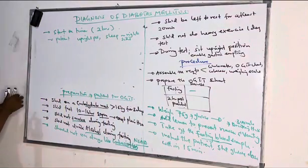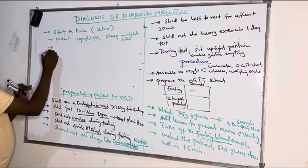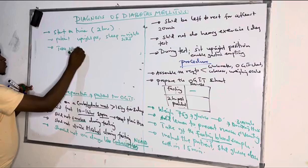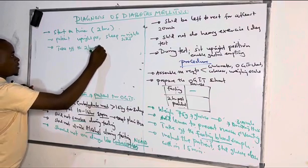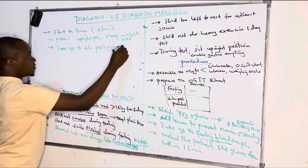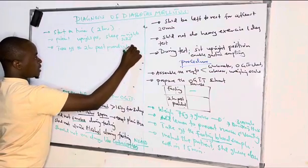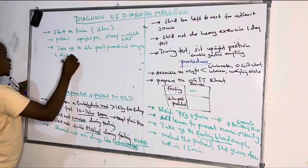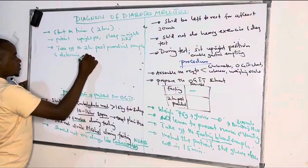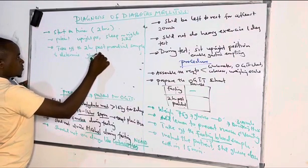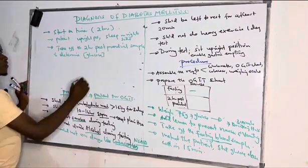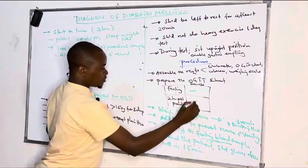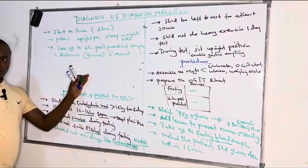After two hours of taking the standard glucose dose, we collect the two-hour postprandial glucose sample and determine its glucose concentration. We then record the result on the OGTT chart.